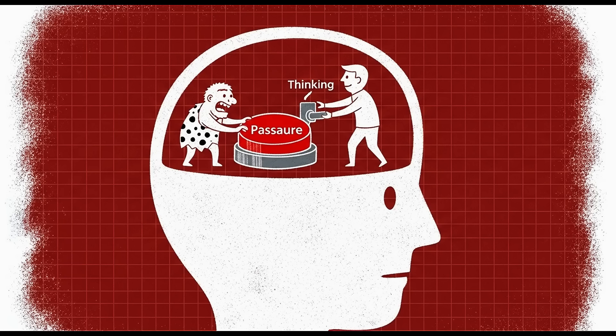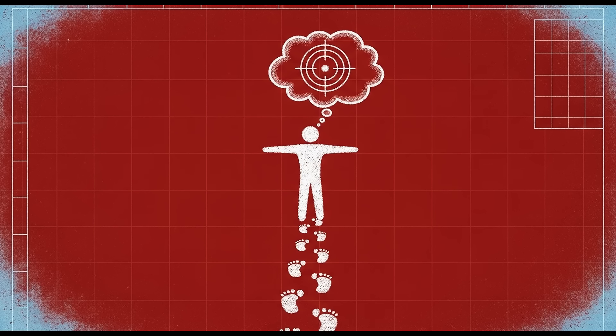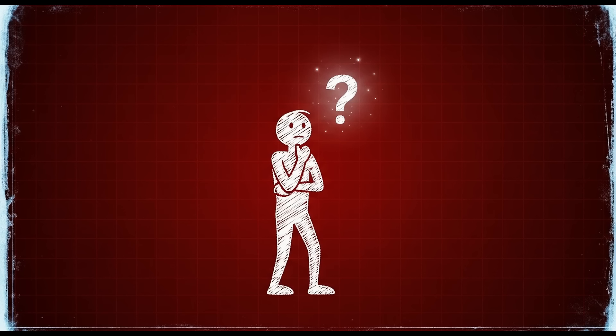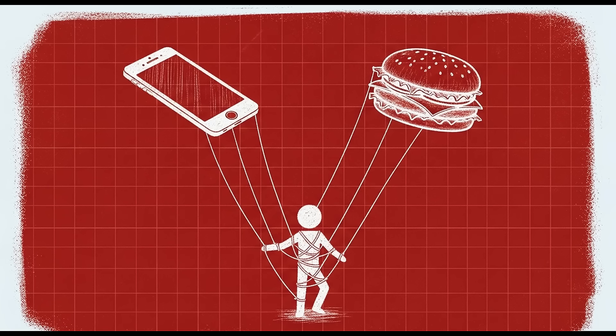But from the other side, from the perspective of someone with a recalibrated brain, discipline feels easier than distraction. Because distraction leaves you feeling empty, anxious, and behind. Discipline leaves you feeling accomplished, confident, and in control. Which is actually harder, spending your days chasing dopamine hits that never satisfy you, or building a life where effort itself becomes rewarding. The path of least resistance in the short term is actually the path of most resistance in the long term.